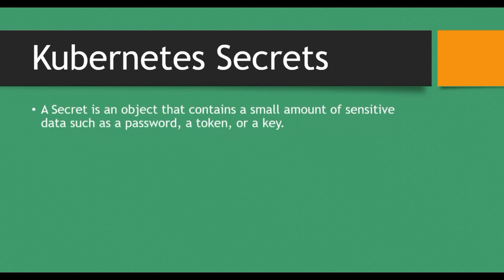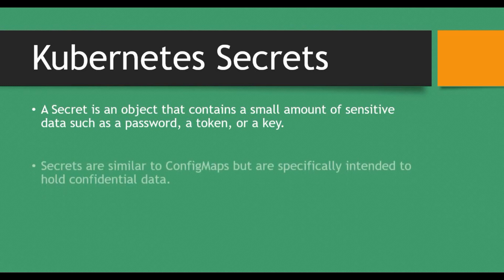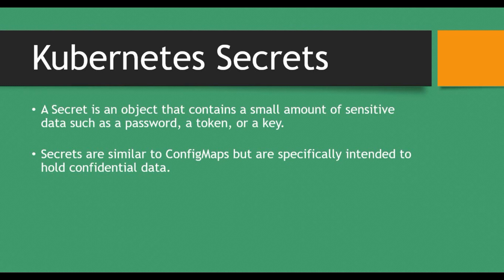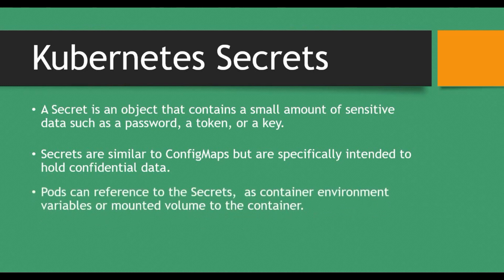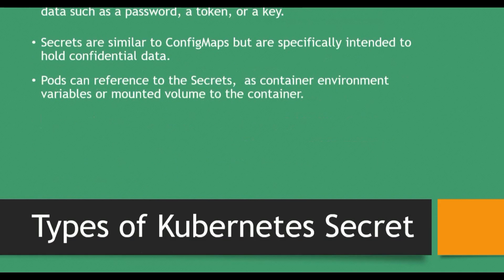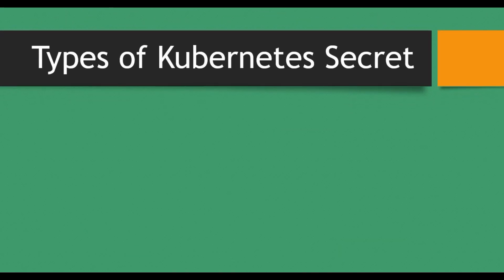Now let's talk about Kubernetes Secrets. A Kubernetes Secret is an object that contains a small amount of sensitive data such as passwords, tokens, or keys. Secrets are used to store confidential data like usernames and passwords that you don't want to expose in your application. Secrets are similar to ConfigMaps but specifically intended to hold confidential data. Secrets can be referenced in pods as container environment variables or mounted volumes.